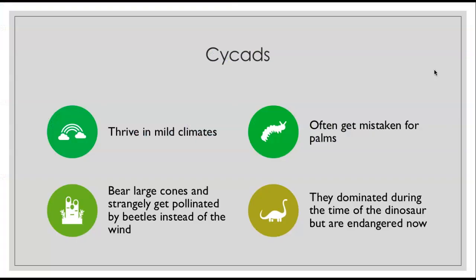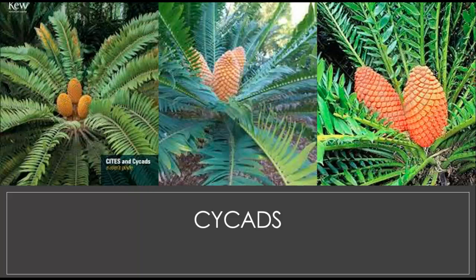The next are the cycads. Cycads thrive in mild climates and are often mistaken for palms. They have large cones and are pollinated by beetles instead of the wind. They actually dominated during the time of the dinosaurs, but they are endangered now. You can see why they might be confused for palms — they have palmate-looking leaves — but they are gymnosperms with cones.